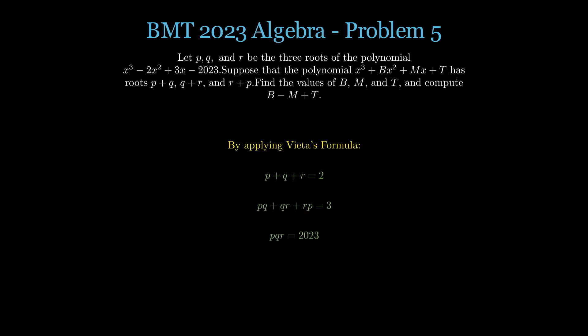Now let's compute the coefficients of the second polynomial. First, we calculate b. The sum of the roots of the new polynomial is p plus q plus q plus r plus r plus p. This simplifies to 2 times the sum of p plus q plus r. Substituting the value of 2 from Vieta's formulas, we find that b equals negative 4.